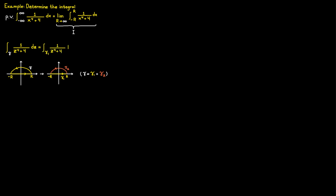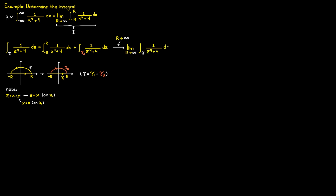We can split the integral into two parts: one for gamma one and one for gamma two. While traveling on gamma one, the imaginary part equals zero, so the complex number equals x, the real part. We rewrite the first integral by replacing all c values with x, where x ranges from minus r to r. We then let r approach infinity — expanding the contour gamma — to end up with our target expression.